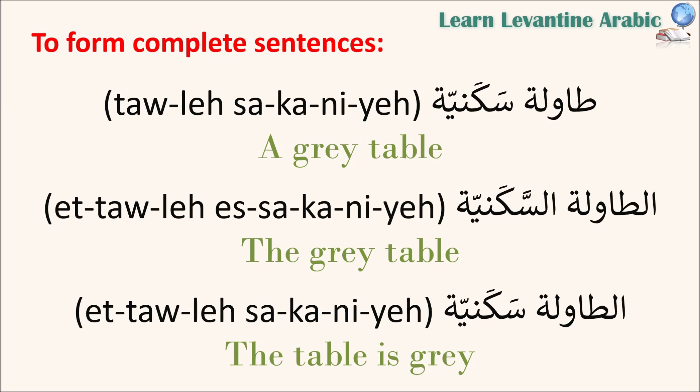Look at how the way we use التعريف can change the meaning. طاولة سكنية — a gray table; both are without التعريف. الطاولة السكنية — the gray table; both the noun and the adjective have التعريف. الطاولة سكنية — the table is gray; here this is a complete sentence with a noun that is definite and an adjective that is indefinite, without التعريف.